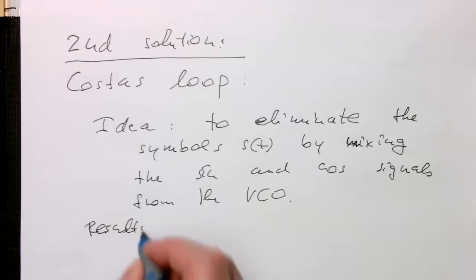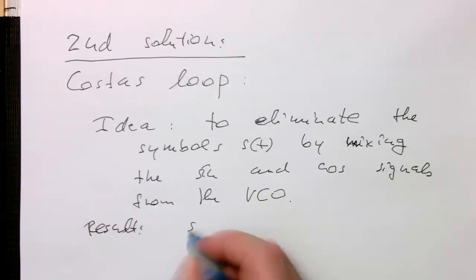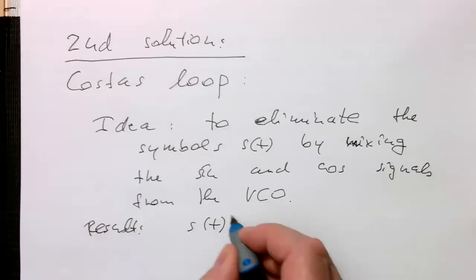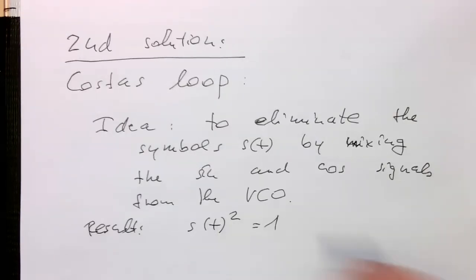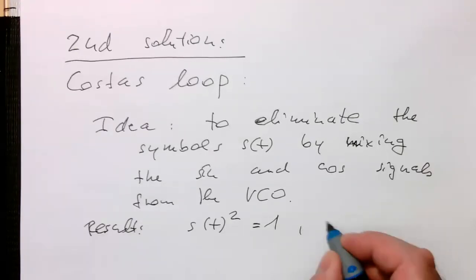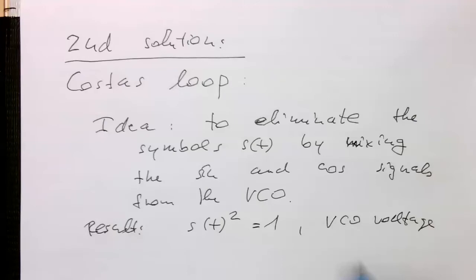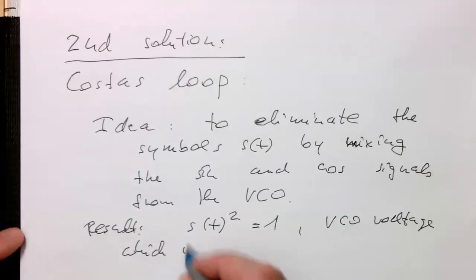The result out of this operation is that S(t), so the baseband signal, the decoded baseband, demodulated baseband signal, is squared and becomes one.